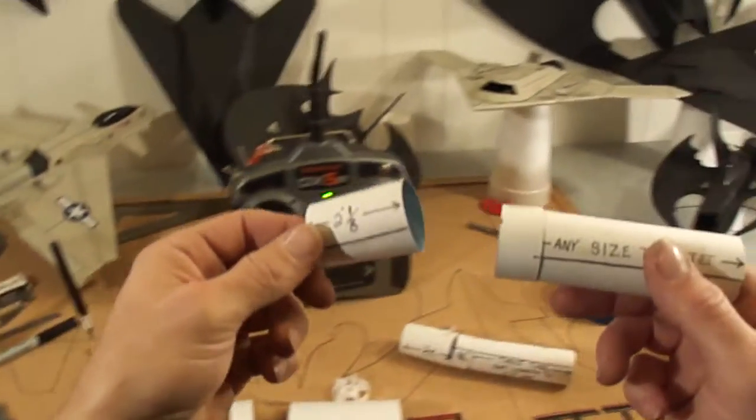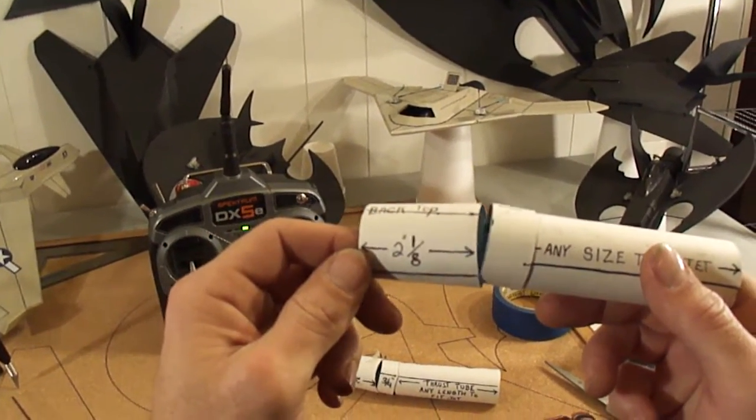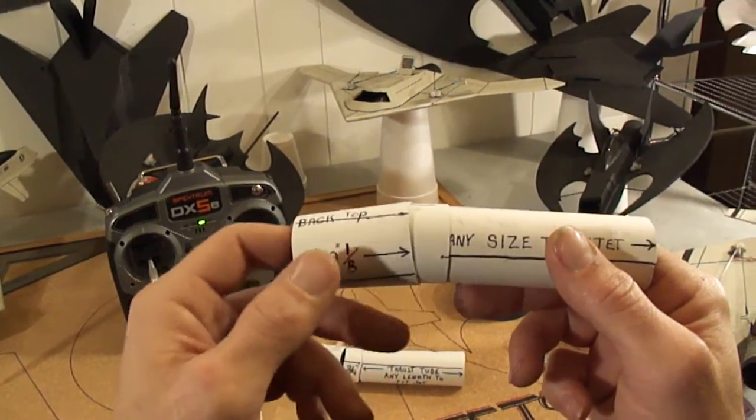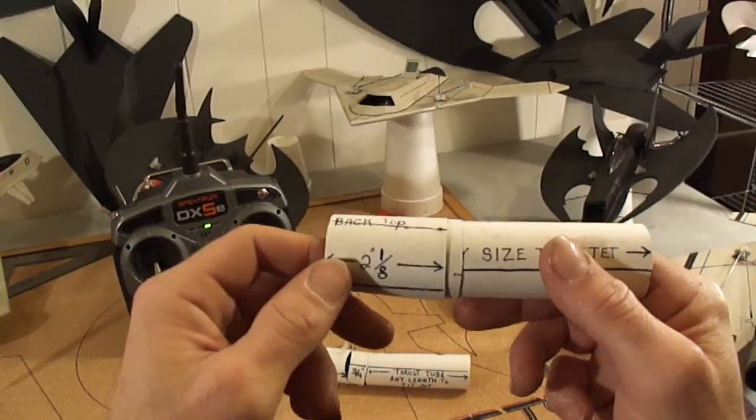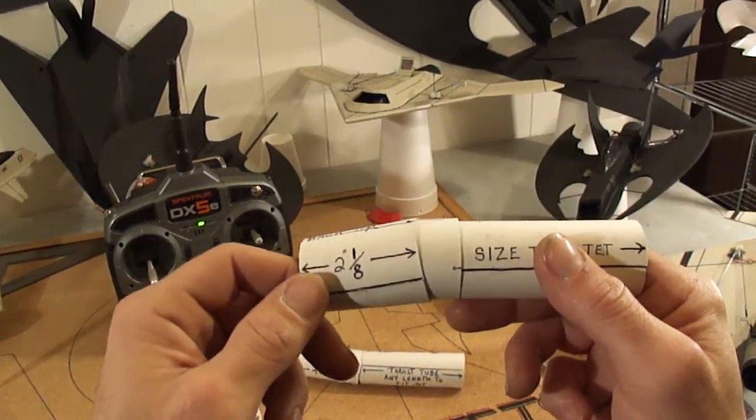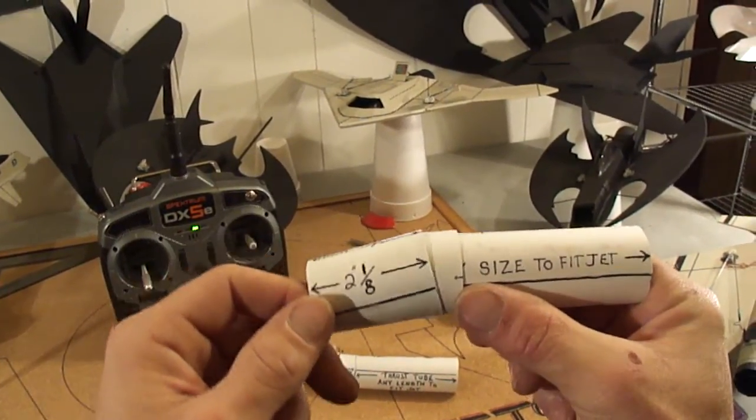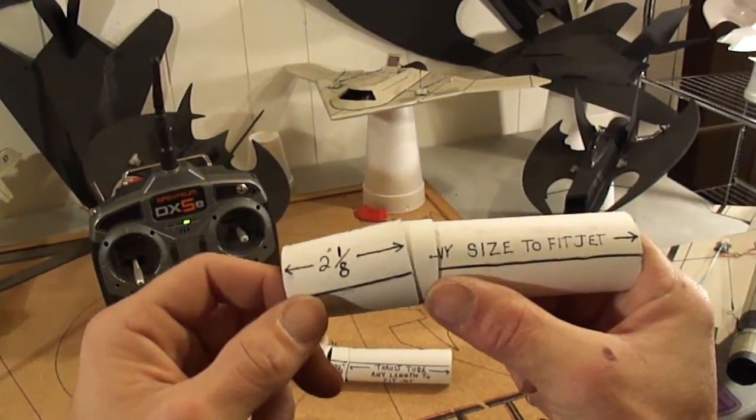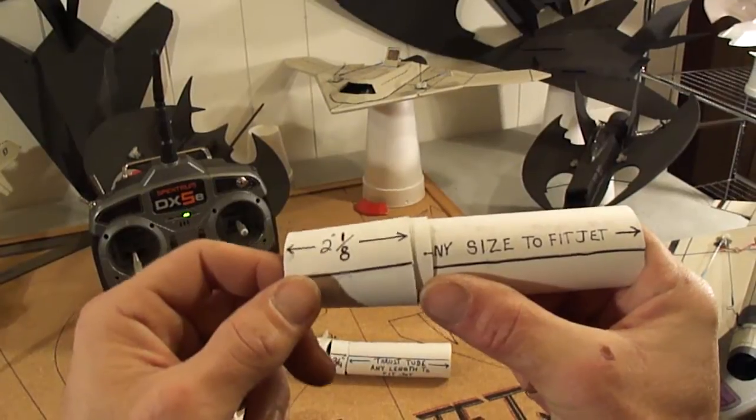And for your thrust vector nozzle, this one's made to slide over your connector piece. So right there, you can already see how you're getting your movement out of them. Again, don't be afraid to make them a little bigger and leave some play in there.